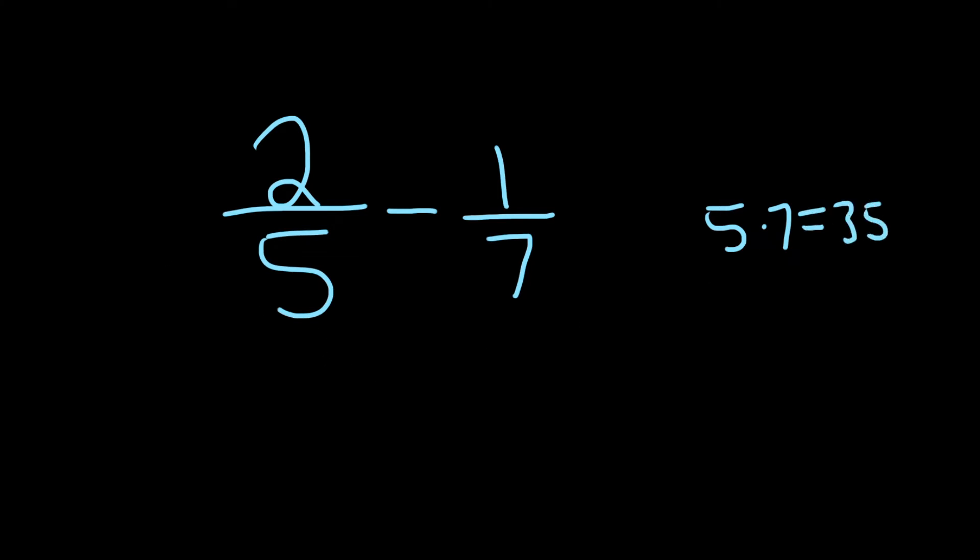So now the goal is to make the bottom of both of these fractions a 35. So in this one here, we have a 5. So the question you ask yourself is, what are you missing here to get a 35? Well, you're missing a 7. So what you do is you multiply by 7 over 7.